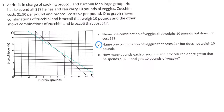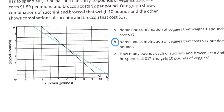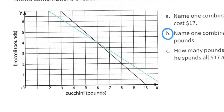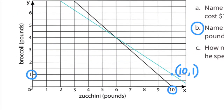Part B: Name one combination of veggies that costs $17 but does not weigh 10 pounds. Now we need to find a point on the blue line that's not on the black line. I'll go with 10 pounds of zucchini and 1 pound of broccoli. That point falls on the blue line, but not on the black line.